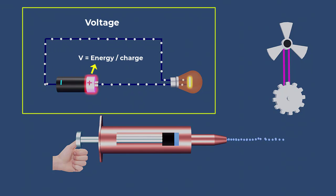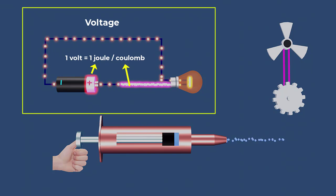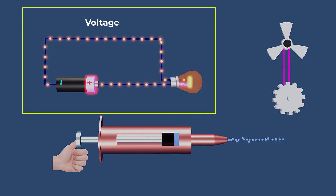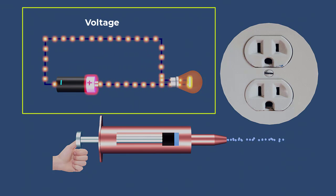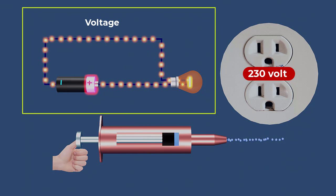Voltage is the electrical energy supplied by a source per unit of charge. A source that supplies one unit of energy to each unit of charge is one volt. A voltage of 230 volts indicates 230 units of energy per unit of charge. Common household outlets typically provide around 230 volts in many countries.